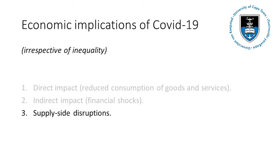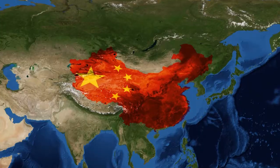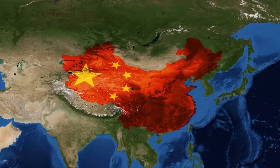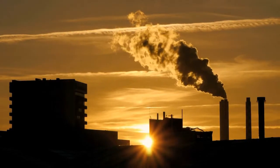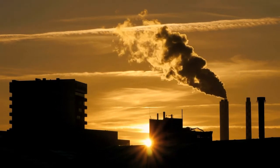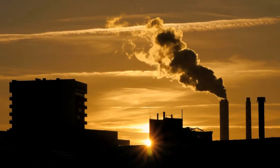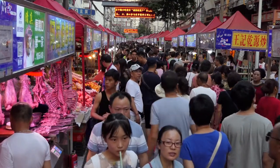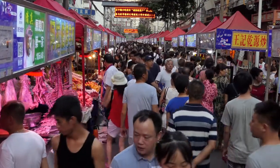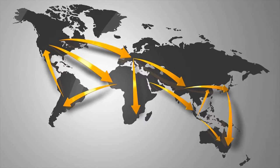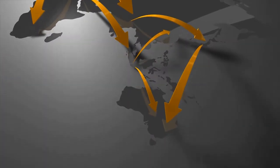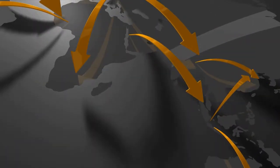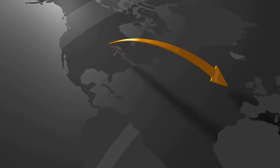The third impact comes not from demand, but rather from supply-side disruption. For example, when the lockdown started in China, some factories were shut down and thus couldn't produce enough goods to meet demand. Not only did this affect the supply of these particular goods, it also had a major impact on other companies and countries because of supply chain disruptions.